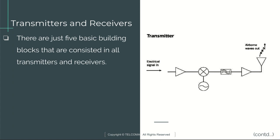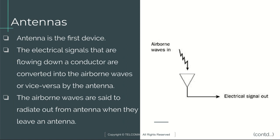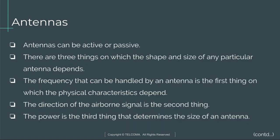The first building block is antennas. The antenna is the first device: electrical signals flowing down a conductor are converted into airborne waves, or vice versa, by the antenna. The airborne waves radiate out from the antenna when they leave it. Antennas can be active or passive.